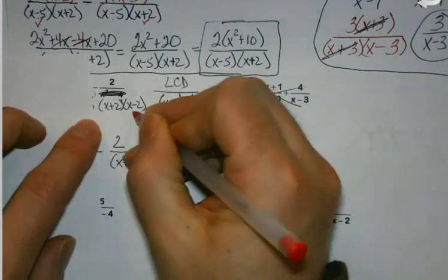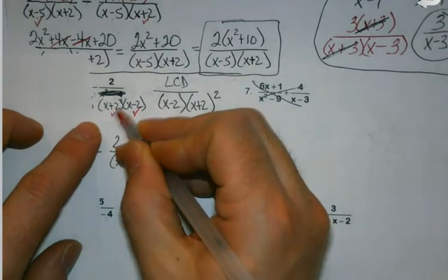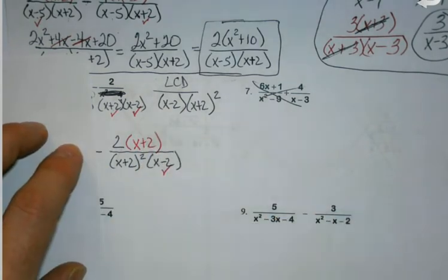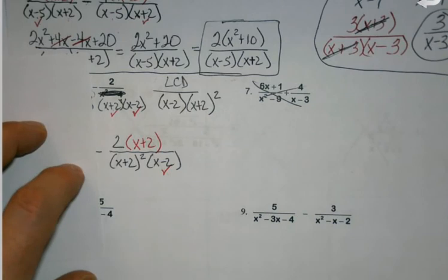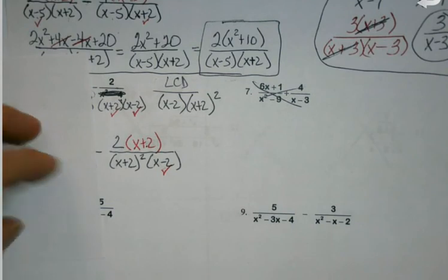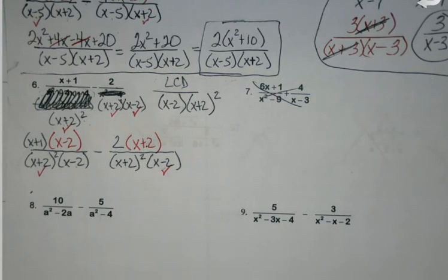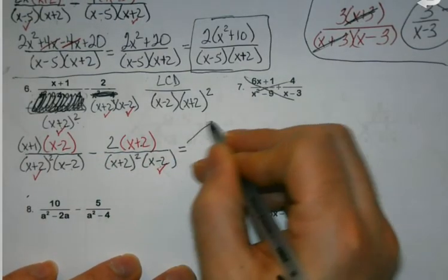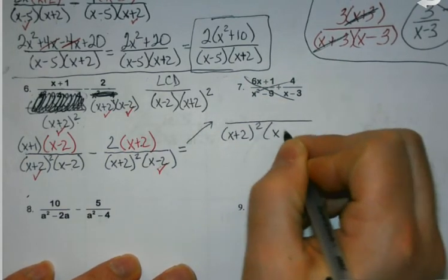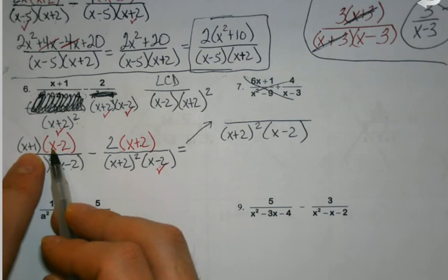Once I get that one, I swing over and I say, okay, what do I have? I have the x minus two. I have one of the x plus twos. So I need one more. Because if I think about it, if I were going to cancel, I could cancel this one with one of these but I'd still have one left. I'd get back to the original fraction that I have.